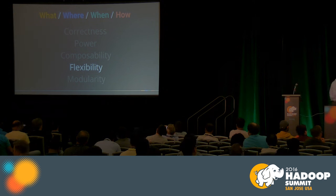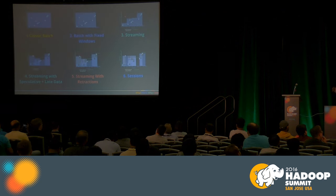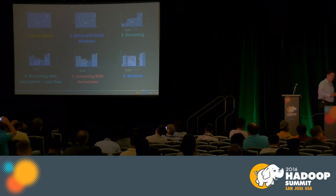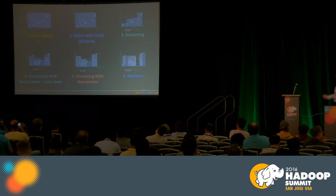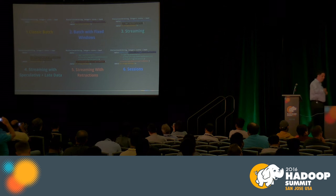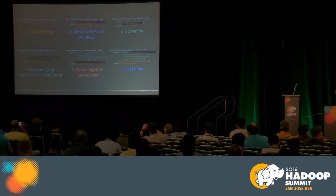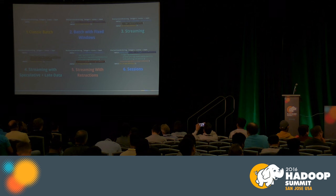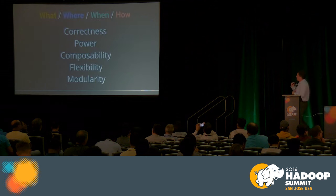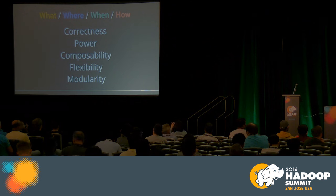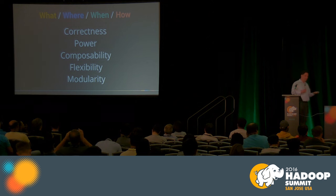Skipping composability, let's look at flexibility. I've shown you six use cases where we haven't changed our business logic at all — we wrote it once and supported all these cases. And for modularity: each case was a one-line change. We went from classic batch, to batch with fixed windows, to streaming, to streaming with speculative and late data, to streaming with retractions. All via single-line changes while core business logic remained untouched. Apache Beam offers a unified model that can express any kind of data processing you may need.